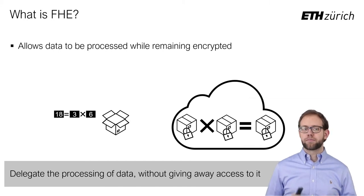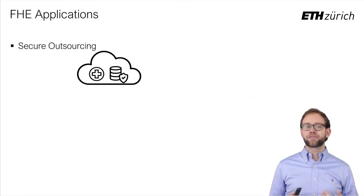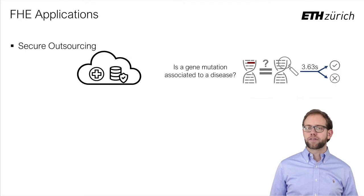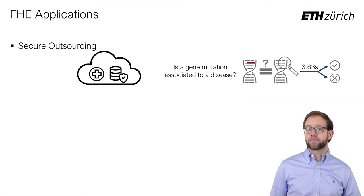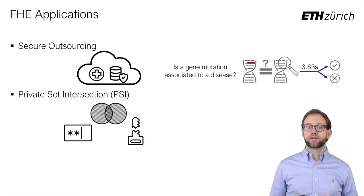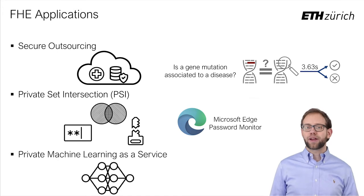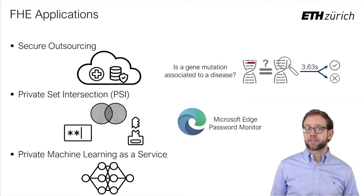Efficient FHE is a major leap towards a private digital world and enables a wide variety of applications. For example, outsourcing medical data currently requires expensive dedicated setups. Using FHE, one could use cheaper standard cloud services while still protecting sensitive and highly regulated patient data. FHE can also be used to accelerate common secure computation tasks like private set intersection, and is now being deployed in Microsoft's Edge browser. Another example is privacy-preserving machine learning as a service, where a platform can offer predictions and classifications of clients' encrypted data without having to share their proprietary model.